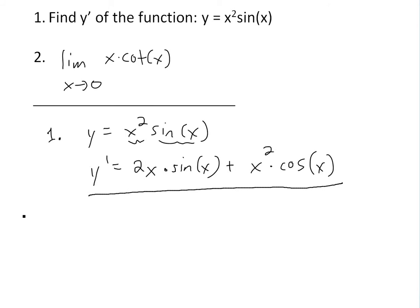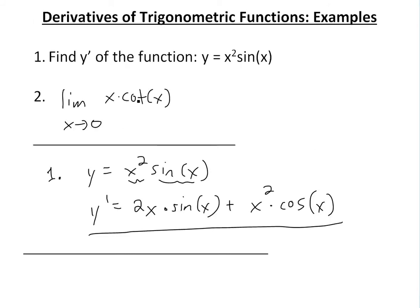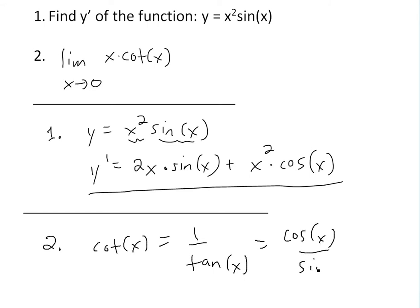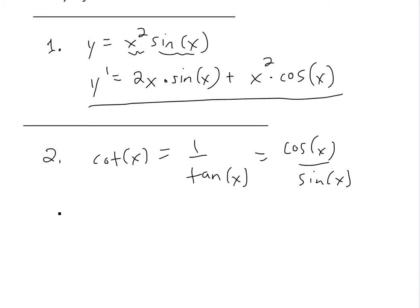Now if we look at the second example, which states: find the limit of x times cotangent of x. The first thing to know is that cotangent of x equals one over tan(x), and tan(x) equals sine over cosine. So cot(x) equals cosine over sine. This limit can be written as the limit as x approaches zero of x times cosine of x divided by sine of x.